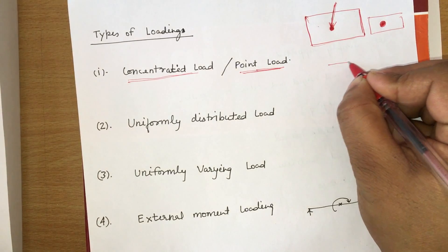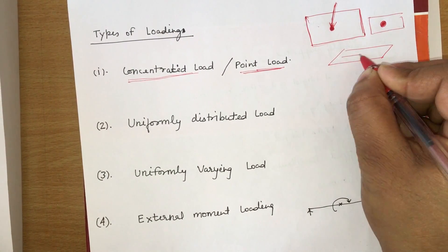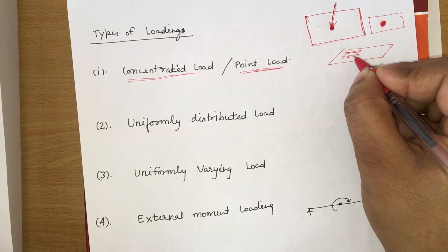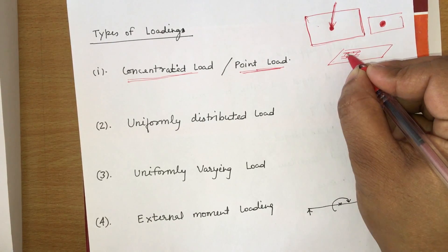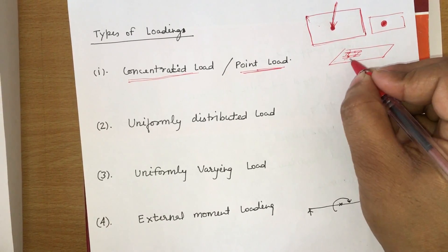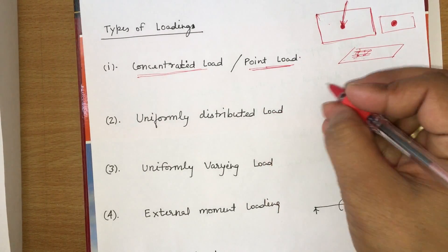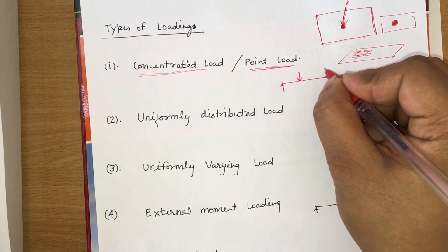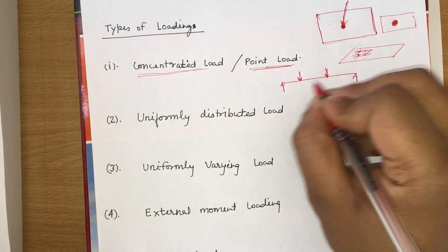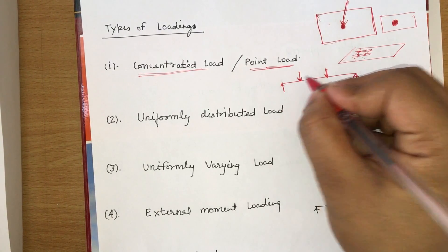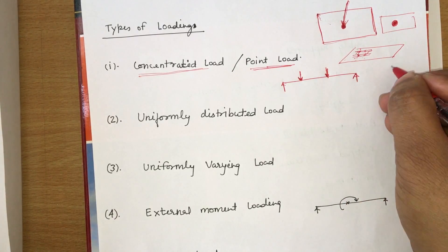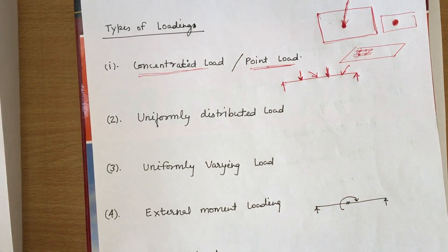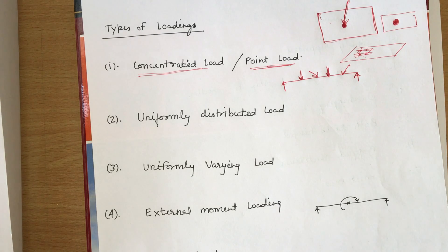Another example: on a bridge, a truck or trailer passing with multiple wheels — wheel one, two, three, four — the load applied on the floor from these wheels is also known as a concentrated load. This is the symbol of a concentrated load on a simply supported beam. The load can also act at an angle.